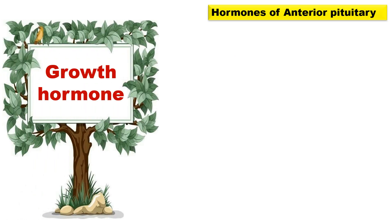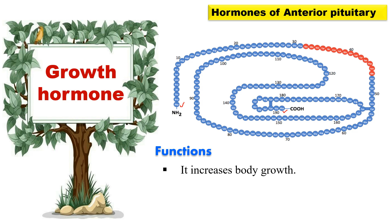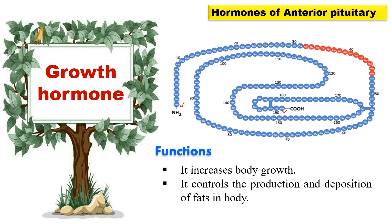The first hormone of the anterior pituitary gland is growth hormone. This growth hormone has 190 amino acids and it contains 2 disulfide bonds as you can see in the structure. It contains phenylalanine at both terminals. The function of growth hormone is that it is required for body growth and it also controls the production and deposition of fat in the body.